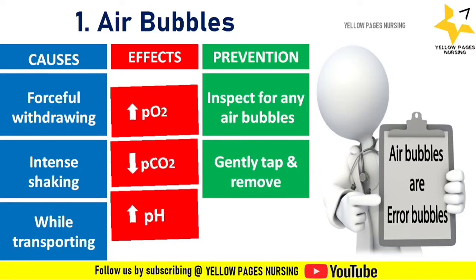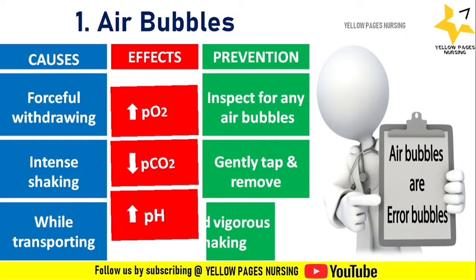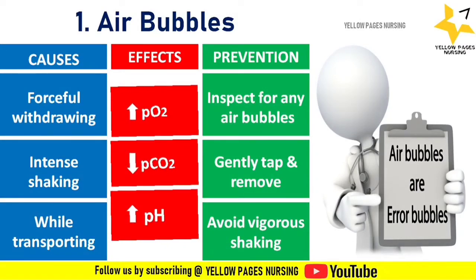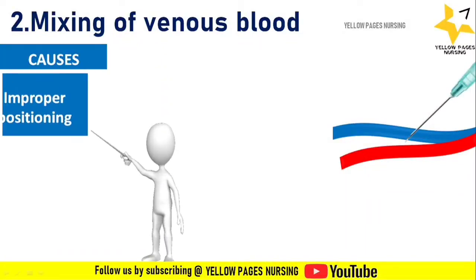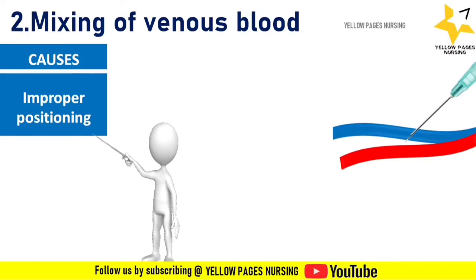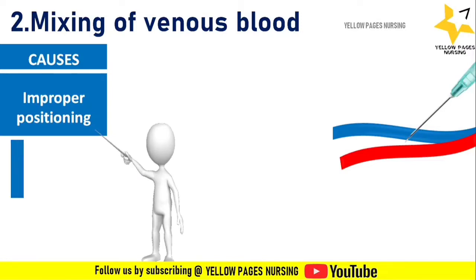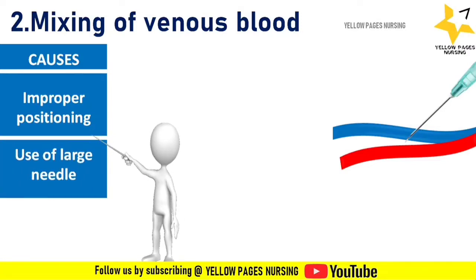When transferring to a vacutainer or specimen container, avoid vigorous shaking. Next comes mixing of venous blood with arterial blood. Even a small amount of venous blood mixed with arterial blood can cause significant changes in ABG readings. While collecting the sample, if the position is not maintained properly, there may be chances of getting pricked in the vein.